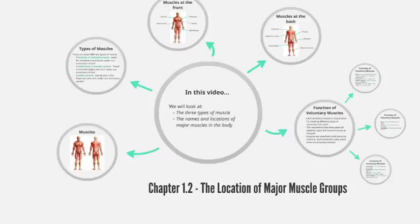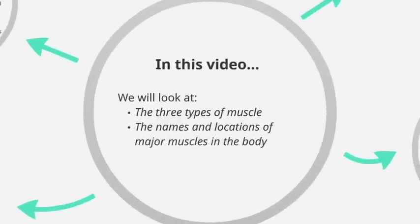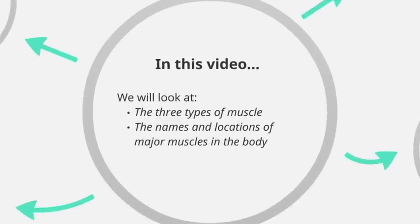Chapter 1.2: the location of major muscle groups. In this video we're going to look at the three types of muscle and the names and locations of major muscles in the body.